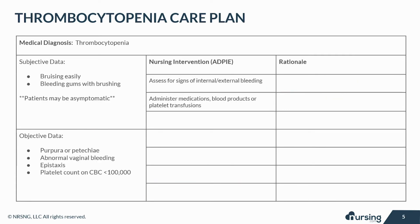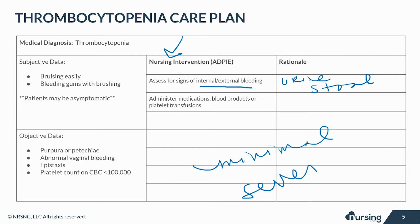Let's take a look at the nursing interventions when caring for a patient with thrombocytopenia. Assess for signs of internal and external bleeding, including blood in the urine or stool, bleeding of the mucous membranes such as the gums and the skin. Observe the skin for petechiae, purpura, and open wounds. Bleeding can be minimal, non-existent, or severe. So even though platelets are low, administering platelets may not be indicated if there are no signs of active bleeding.